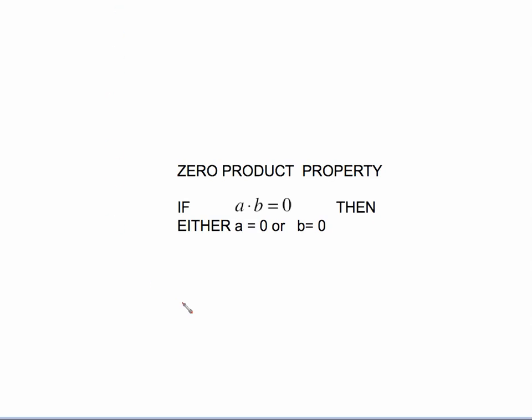It's called the zero product property, and it says if a times b equals 0, then either a equals 0 or b equals 0. What that means is, if we played a little game and I said, I just multiplied two numbers together and got 0, can you tell me what one of the numbers is? Of course you could.